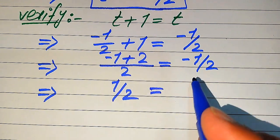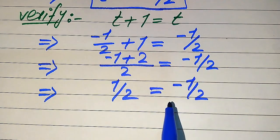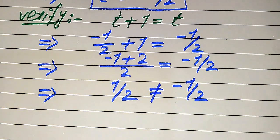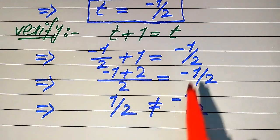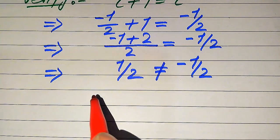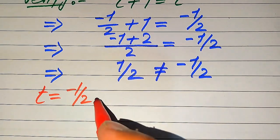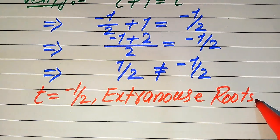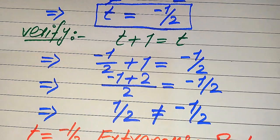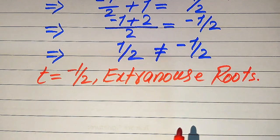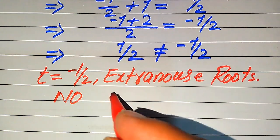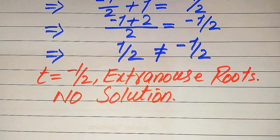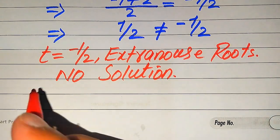We obtain 1/2 on the left hand side and −1/2 on the right hand side. Both sides are not equal because one is positive and the other is negative. This means t = −1/2 does not satisfy the given equation, so t = −1/2 is an extraneous root. Since we cannot get any other value of t, this question has no solution. This is our conclusion from the first method.